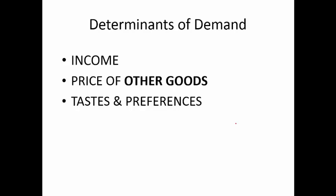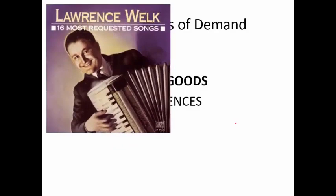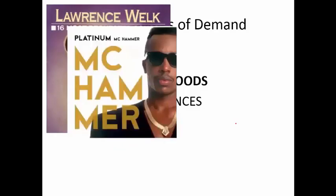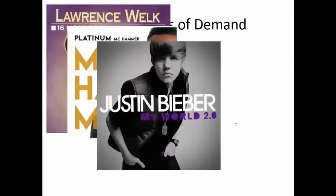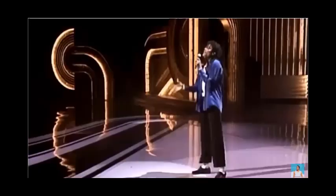So we've got income and the price of other goods — substitutes and complements. Tastes and preferences is really a catch-all category. We don't try to fully understand it — that's a matter for psychology — but we chalk up anything not covered by the other determinants to tastes and preferences. For example, musical tastes change over time. Here's what my grandparents' generation listened to, what was popular when I was a kid, and then something that remained popular but had a sudden surge in demand following the untimely death of Michael Jackson.